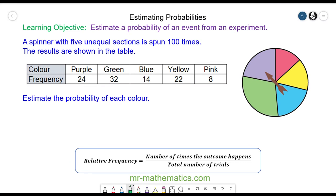Hello and welcome to our lesson on estimating probabilities. We're going to estimate the probability of an event happening based on experimental data. This is called a relative frequency.